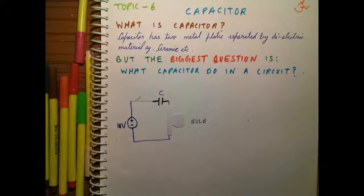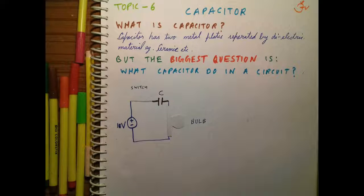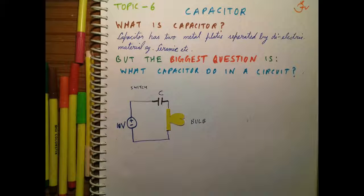Now see carefully what happens when we turn on the switch. As we turn on the switch, instantly the bulb blows. But after some time, this bulb gets switched off, but the switch is still on.